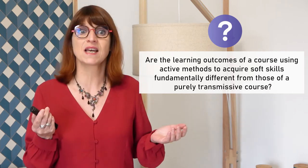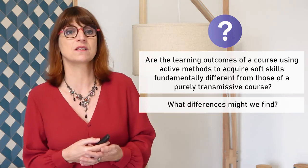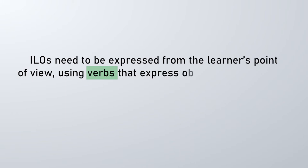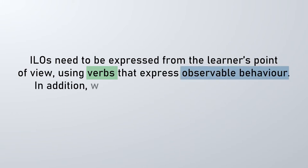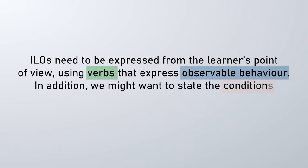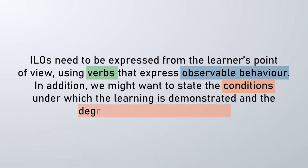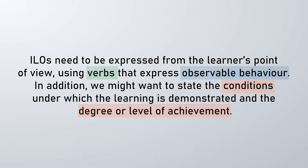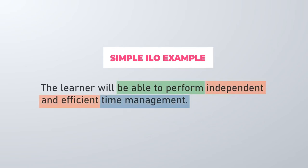If the answer is yes, what differences might we find? From the literature, we know that ILOs need to be expressed from the learner's point of view, using verbs that express observable behaviour. In addition, we might want to state the conditions under which the learning is demonstrated and the degree or level of achievement. As an example, a simple ILO might be: the learner will be able to perform independent and efficient time management.